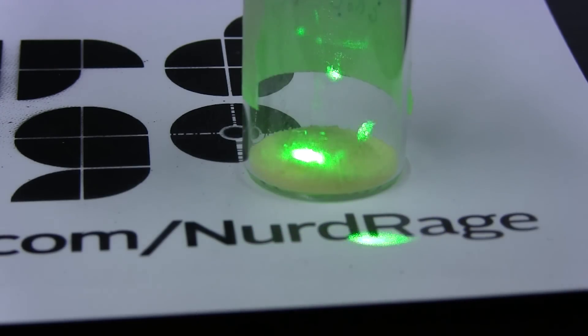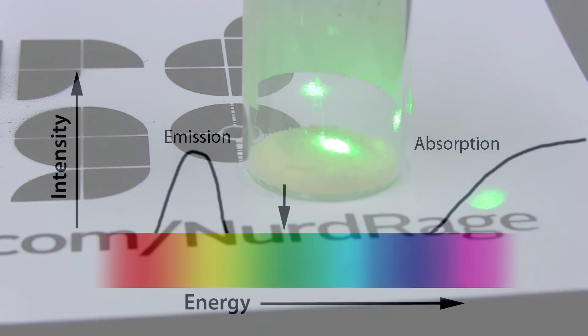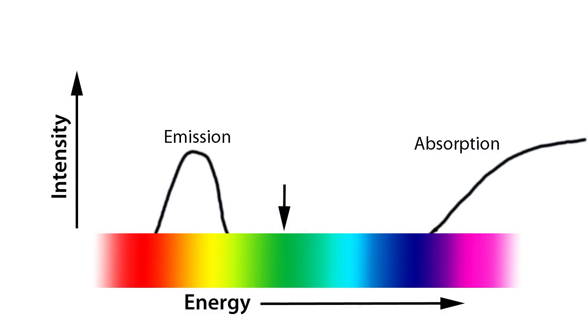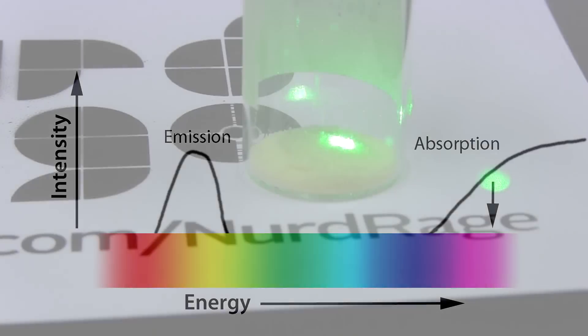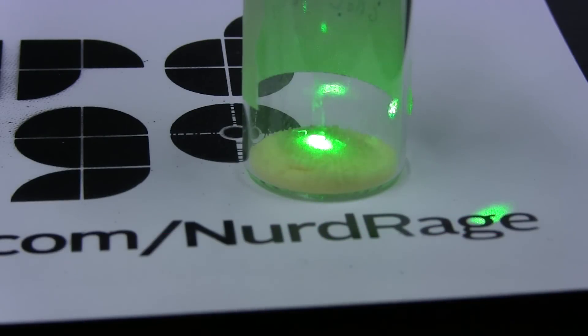But under green light it doesn't glow at all. This is because the substance simply doesn't absorb green light and so it can't reach an excited state where it can fluoresce. So you need both absorption and higher energy to get fluorescence. Higher energy does not automatically imply absorption.